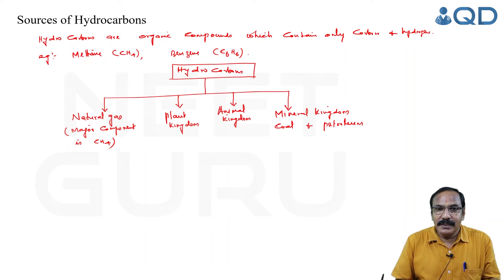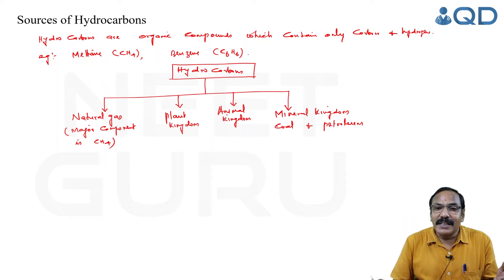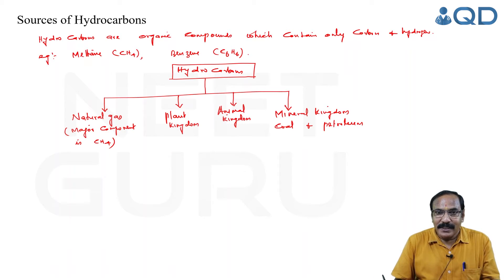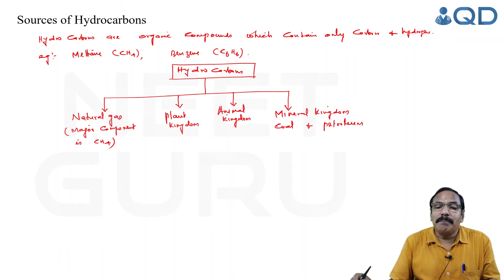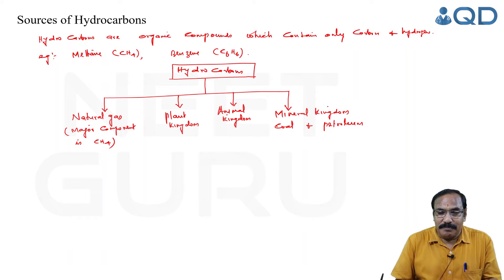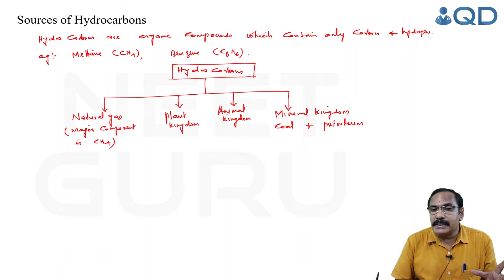So this is the introduction to hydrocarbons — organic compounds containing only carbon and hydrogen are called hydrocarbons. CNG, or compressed natural gas, is used in automobiles to minimize air pollution. The major sources of hydrocarbons are natural gas, plant kingdom, animal kingdom, and mineral kingdom. Coal is formed by slow decomposition of plants of prehistoric forests.